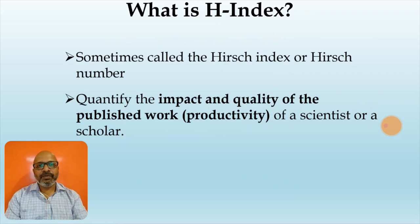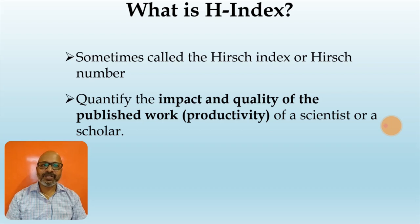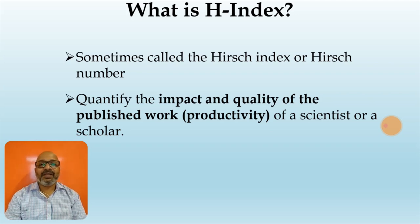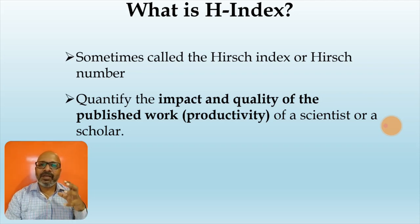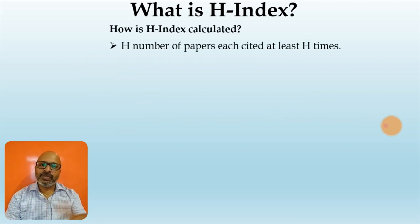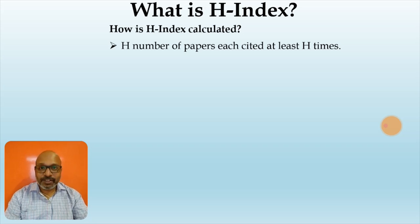Next, we will try to understand what is H index. H index is sometimes also called the Hirsch index or the Hirsch number. Basically, H index quantifies the impact and the quality of the published work of a scientist or a scholar — it tells us how productive that particular scientist or scholar is. H index can simply be put as: H number of papers each cited at least H times.